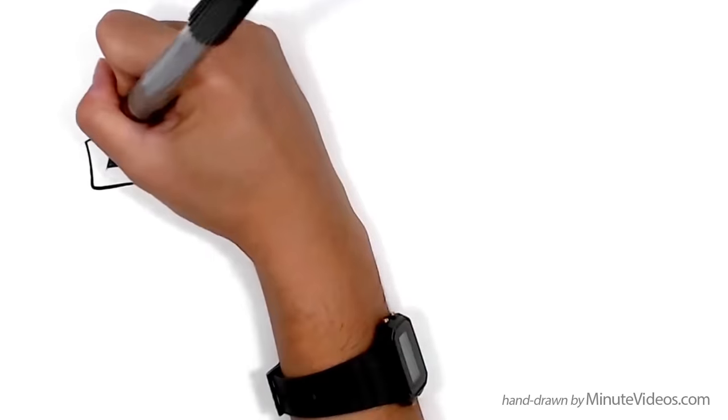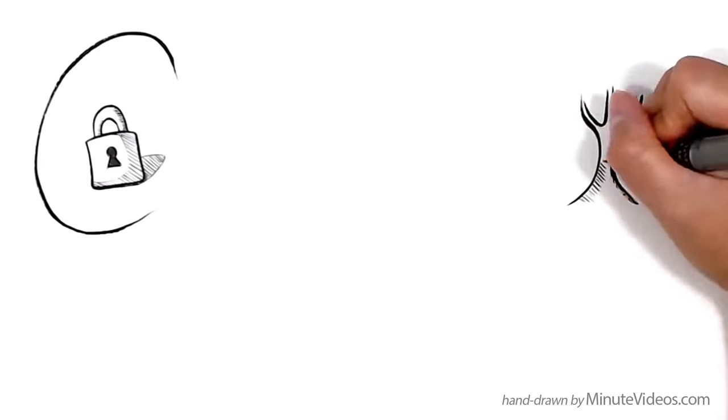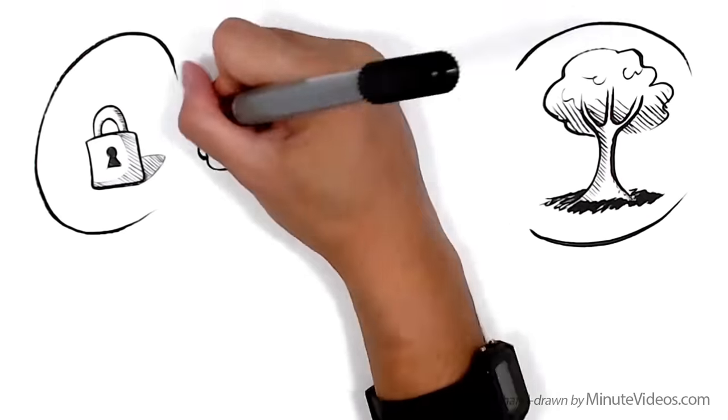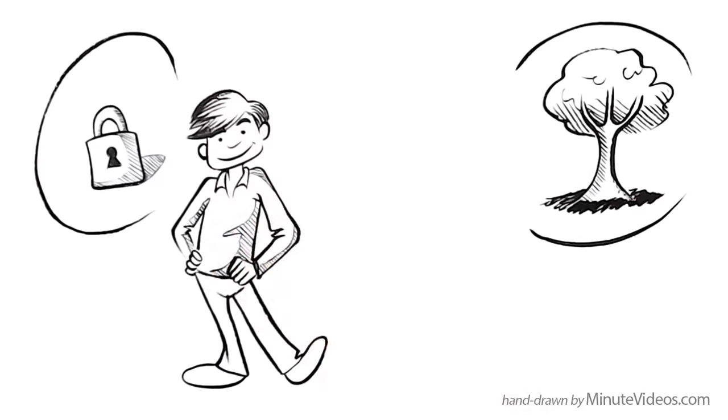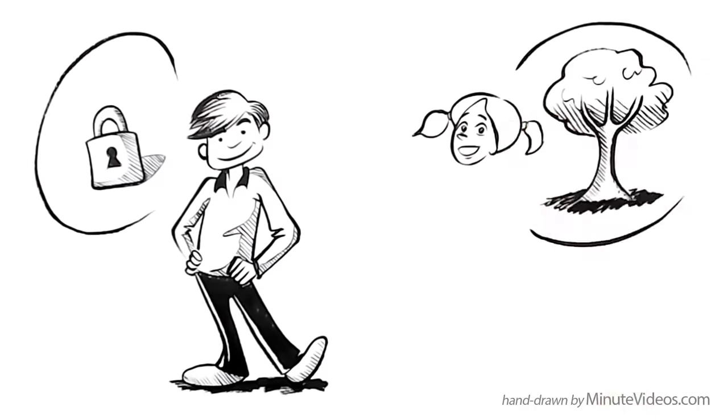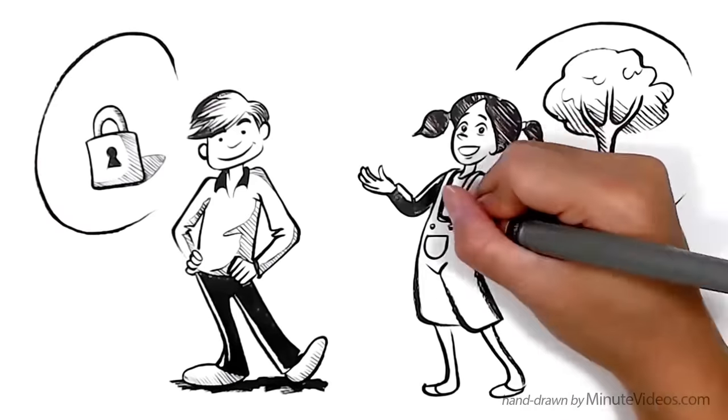To illustrate the difference in everyday life, let's observe two imaginary kids. Jay thinks you've either got it or you haven't. Ann knows that she can learn anything if she wants it enough.